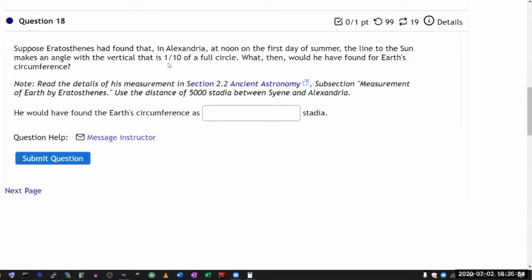So then the question is what then would he have found for the earth's circumference? You can kind of just guess at the number. If you look at this and you're guessing, maybe is it 10 times 5,000 and put in 50,000, then it'll probably grade it as correct.